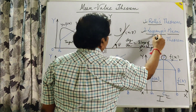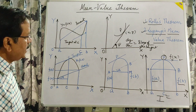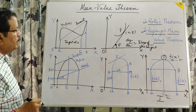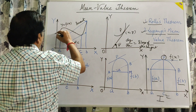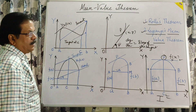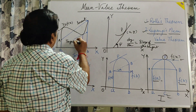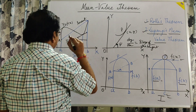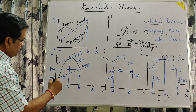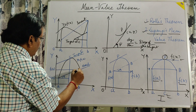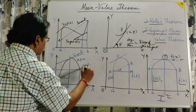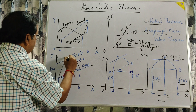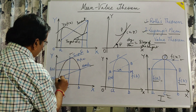Lagrange came after Rolle. He was an Italian mathematician. He observed that if the curve is changed in such a way that we are not getting any point where the tangent is parallel to the X axis, then for two different points a and b on the X axis, there exists at least one real number c where the tangent makes slope angle alpha.